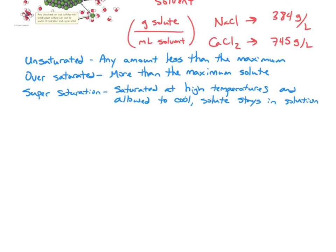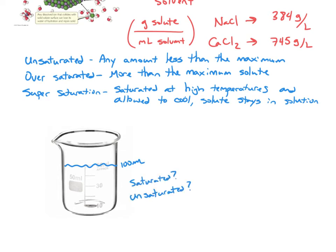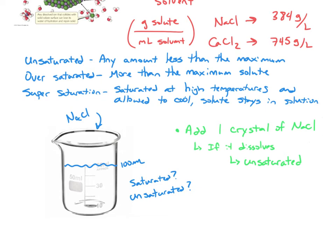The AP College Board writers like to set up a scenario where you must decide whether a solution is saturated or unsaturated. Here's a beaker with 100 mL of water at 20°C containing NaCl — you don't know if it's saturated. The test: add one more crystal of salt. If the crystal dissolves, the original solution was unsaturated — it had room for more. If the crystal sinks to the bottom and remains undissolved, the original solution was saturated.